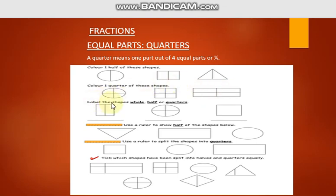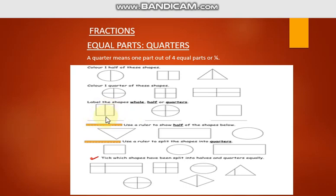The next question is: label the shapes as whole, half, or quarters. This shape is the whole, so you write 'whole' here. This shape is divided into four equal parts, so you write 'quarters' on this line. This shape is divided into two equal parts, so you write 'half' here. So: half here, quarters here, and whole here.